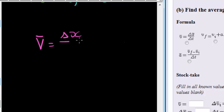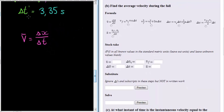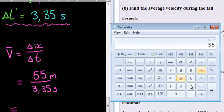My displacement I know is 55 meters, my change in time is 3.35 seconds, and therefore my answer is 55 divided by 3.35.